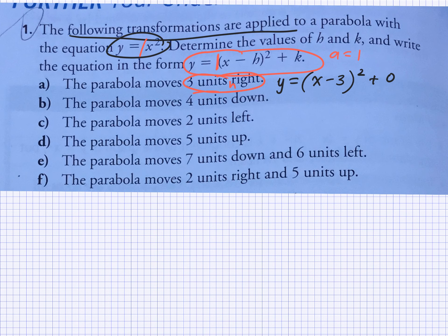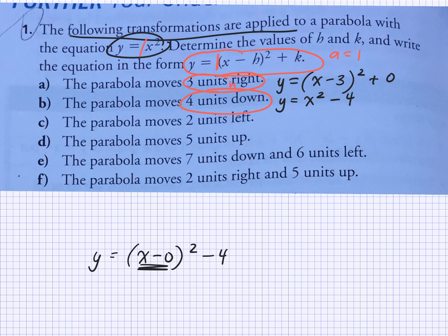So now if it moves four units down, how would you write the equation? Y is equal to X squared minus 4. Excellent. Because really it's X minus zero squared minus 4, and you simplified that in your head, which is X squared minus 4. Perfect — that was a hard one!